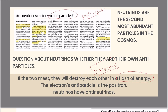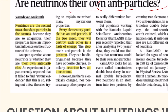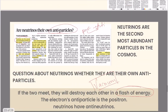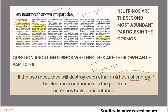Now the question comes: what kind of particles are neutrinos? Neutrinos are the second most abundant particles in the cosmos. If they are the second most abundant particles, then what is the first and most abundant? Those are our photons.